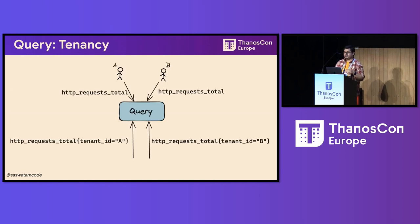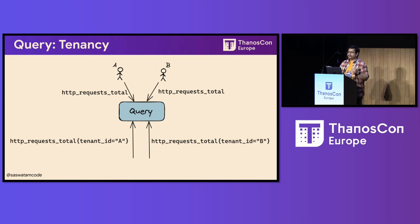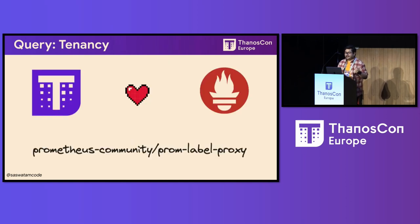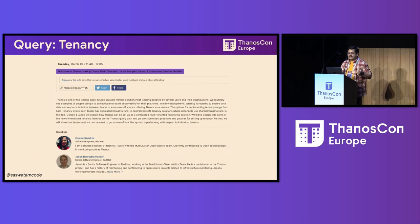Lastly, we also introduced the notion of query tenancy natively in Thanos now. So you can fire Prometheus queries from either the query front end or the query with a tenant header and then get back data for only the tenant you're looking for. It's important to note that Thanos doesn't really support authentication or authorization features, as that is kind of out of scope, but you can pair it with other OSS tools to get authorized tenancy on Thanos query. As we are closely knit with the Prometheus community, we leveraged from label proxy and imported it into Thanos to enable this feature. My colleagues Colleen and Jacob will actually be delivering a talk about this shortly here at ThanosCon today.